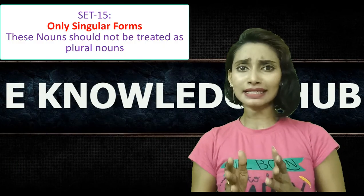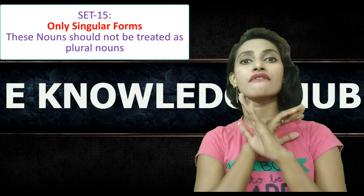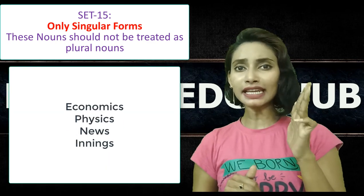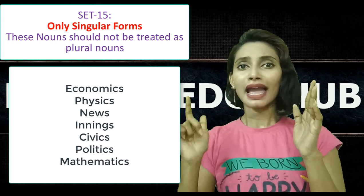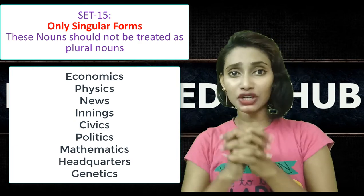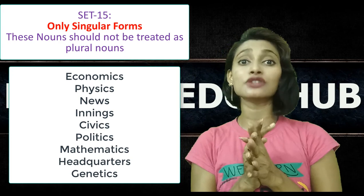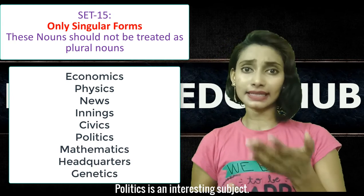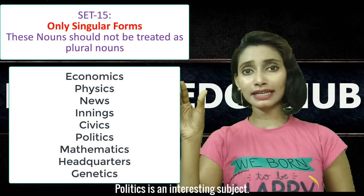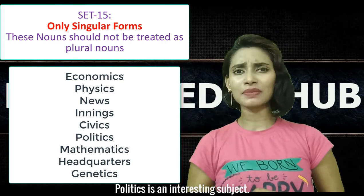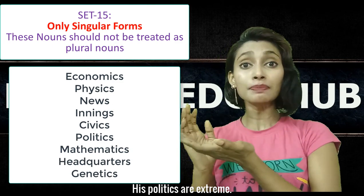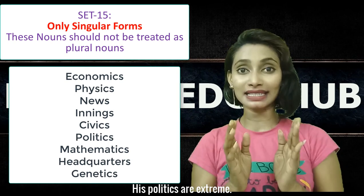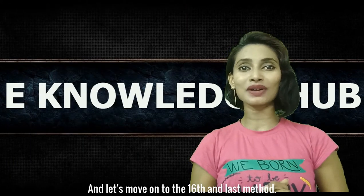Now let's see set 15. In this set, the nouns end in the letter S but should never be treated as plural — like economics, physics, news, innings, civics, politics, mathematics, headquarters, genetics, etc. They end with S but are singular forms and should be treated as singular only. However, there is an exception: 'politics is an interesting subject' — treated as singular; but 'his politics are extreme' — here the same word politics is treated as plural. Based on the situation and sense, we have to consider them either singular or plural.